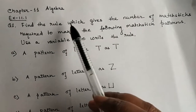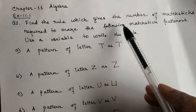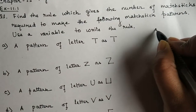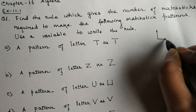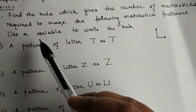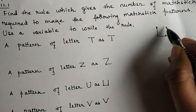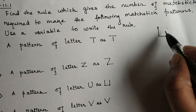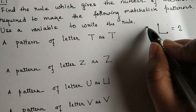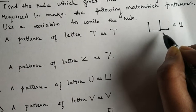So here, the question says to find the rule which gives us the number of mastics required to make the following mastic patterns. Suppose I have taken the letter L, in which 2 mastics are used. Now we have to find how many mastics are required if there are, say, 15 or 16 L's. So in 1 L, 2 mastics are used. Suppose if I take one more L, then it will be 4.